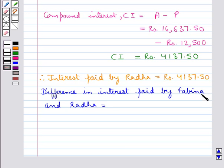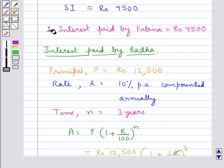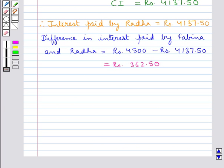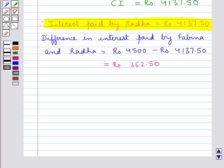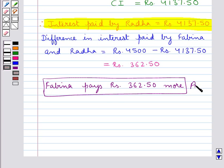The difference in interest paid by Fabina and Radha = Rs. 4,500 − Rs. 4,137.50 = Rs. 362.50. As you can see, interest paid by Fabina is Rs. 4,500, which is more than interest paid by Radha, which is Rs. 4,137.50. So Fabina pays more interest than Radha, and our final answer is: Fabina pays Rs. 362.50 more. Hope you enjoyed the session — have a good day, thank you for watching.